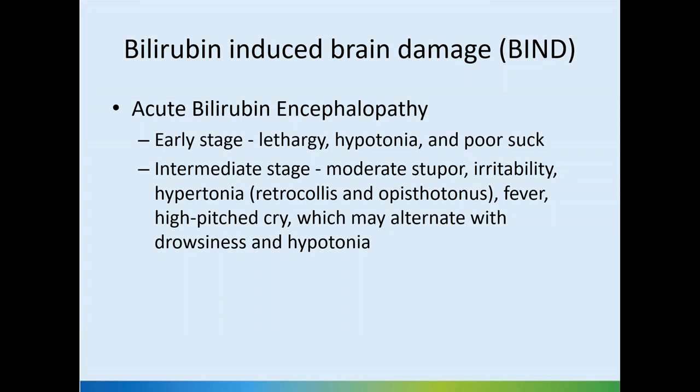What we aim to prevent is bilirubin-induced brain damage, which can present in the acute stage as acute bilirubin encephalopathy. In early stages the baby has lethargy, hypotonia, and poor suck. In the intermediate stage the baby becomes stuporose, irritable, and hypertonic, with retrocollis and opisthotonus posturing, fever due to hypothalamic involvement, and high-pitched cry alternating with drowsiness. These features are not specific to bilirubin-induced brain damage — they can also occur with sepsis, meningitis, or hypoglycemic brain injury.